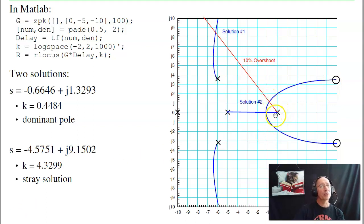If I want 20% overshoot, I draw on the damping line 0.45910, and where it intersects the root locus is my design point. The one I care about is the dominant pole at s equals minus 0.66 plus j1.32. At that point, pick k so that the gain is 1. It turns out that k is 0.4484. That's my design.